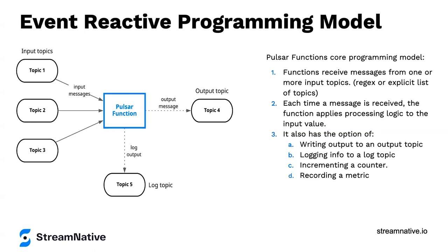The programming model is reactive — as a message comes in, the function code gets invoked. You configure your Pulsar function to listen to input topics; when any event comes in, the function method gets invoked with the message fed in automatically. You can do processing on the data, optionally output to another topic, update a database, write to a log, implement internal counters, and emit metrics to monitor your workflow. It's just a simple piece of code triggered automatically from messages arriving inside a Pulsar topic.